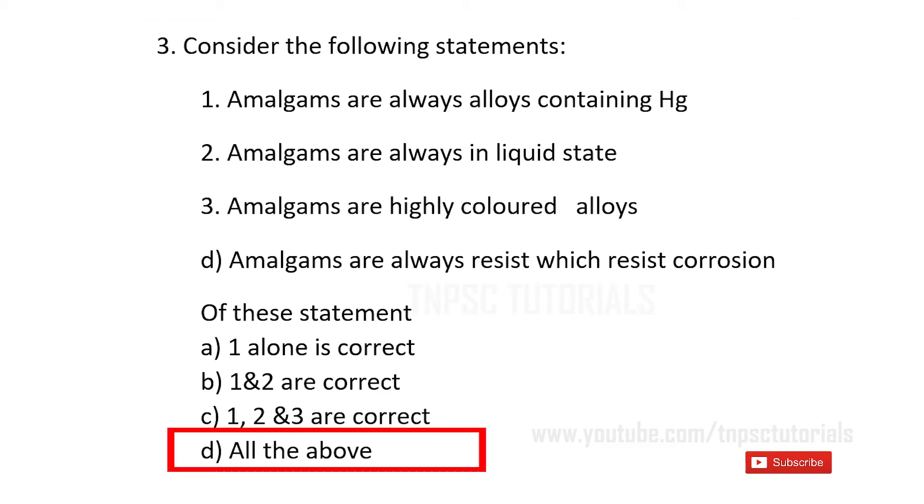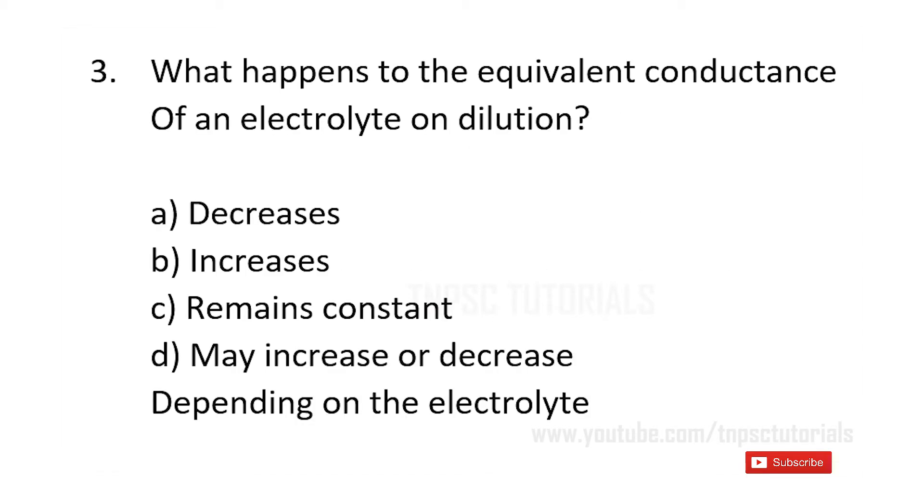Fourth one: what happens to the equivalent conductance of an electrolyte on dilution? a) decreases, b) increases, c) remains constant, d) may increase or decrease depending on the electrolyte. And the answer is d) may increase or decrease depending on the electrolyte.